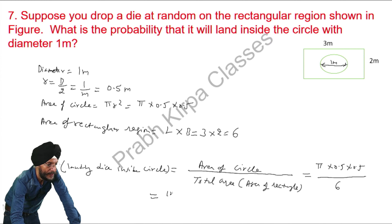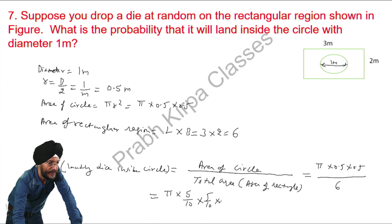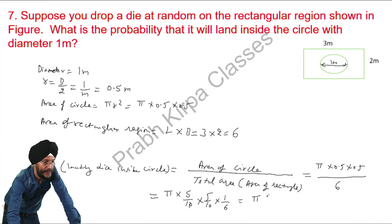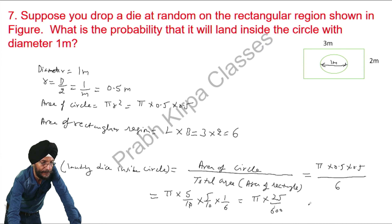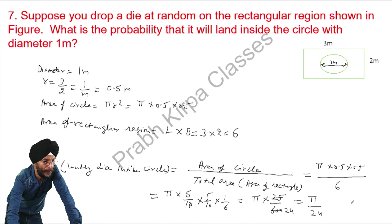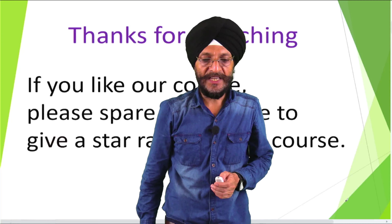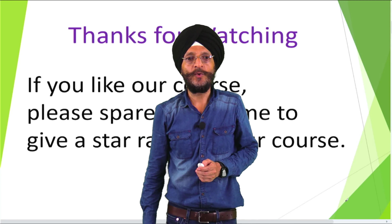We can also write it as pi times 5 over 10 times 5 over 10 times 1 over 6, because we have removed the decimal before 5. So it becomes pi times 25 over 600 — since 10 times 10 is 100, and 100 times 6 is 600. We can simplify: 25 divides 600 giving 24, so the answer is pi over 24. This is the probability of landing of the die inside the circle. Thanks for watching — if you like our course, please spare some time to give a star rating.